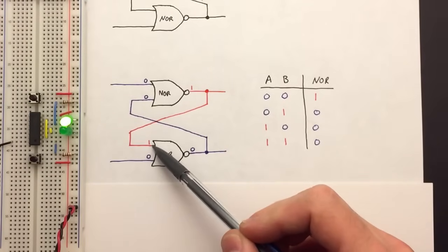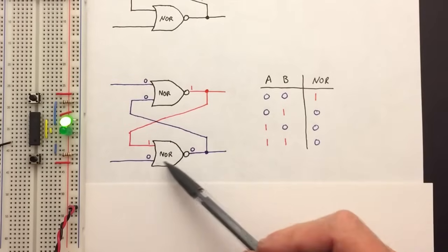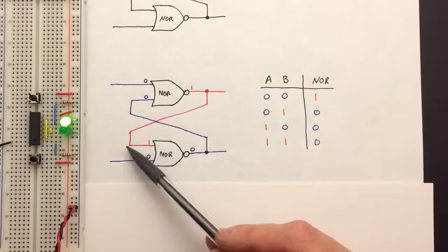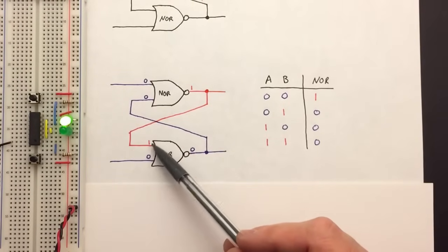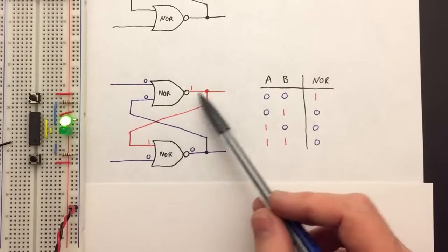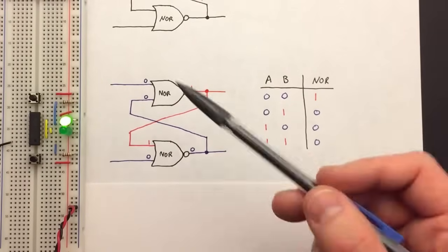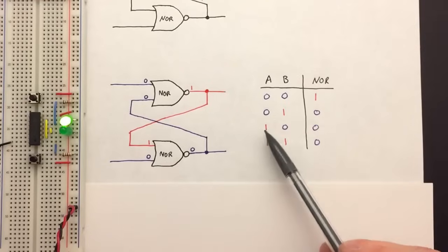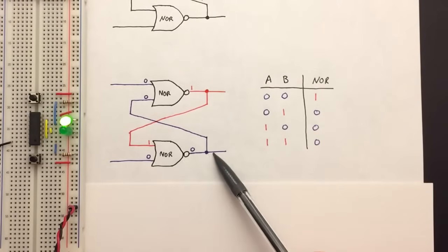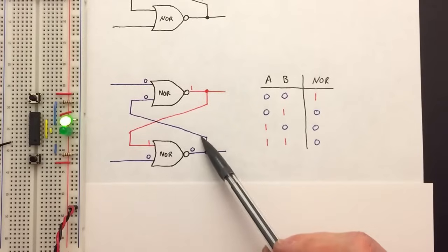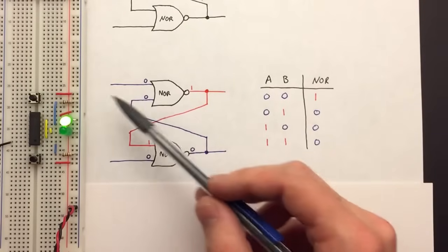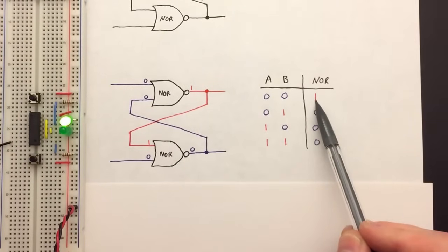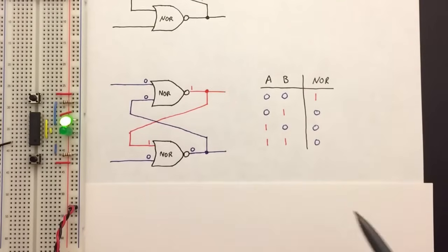The top gate being on implies this input down on the bottom gate must also be on. Reasoning through it: the bottom NOR gate has inputs of one and zero — the one comes from the top gate output, and the bottom input switch is not pushed so that's zero. One and zero means the output is zero, so the bottom LED is off. That zero feeds back into the top NOR gate, and since neither switch is pushed, the top gate gets zero and zero — which means it outputs one. So the top NOR gate is on. This all makes sense.